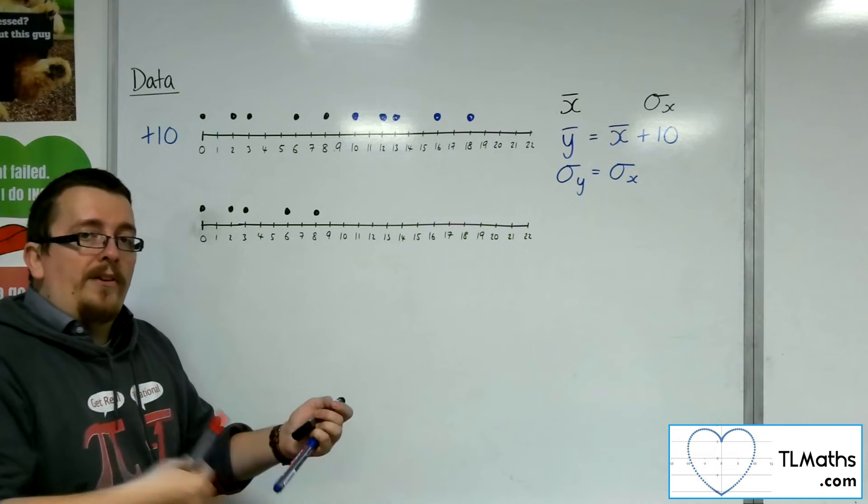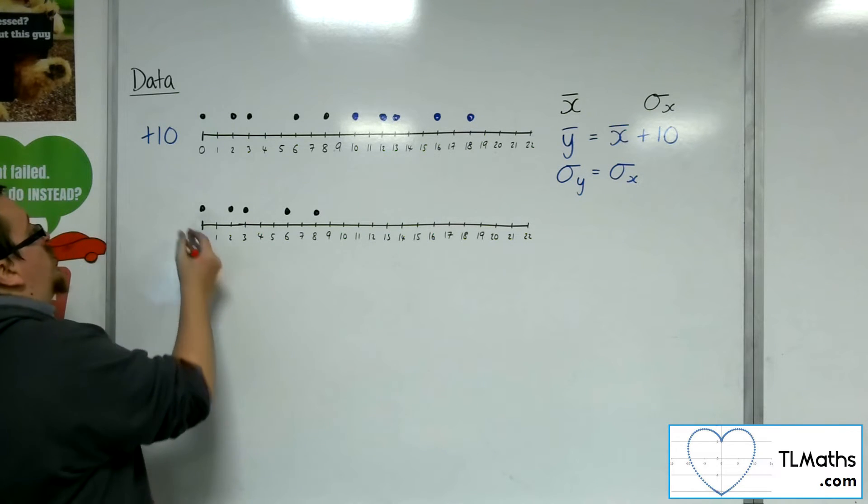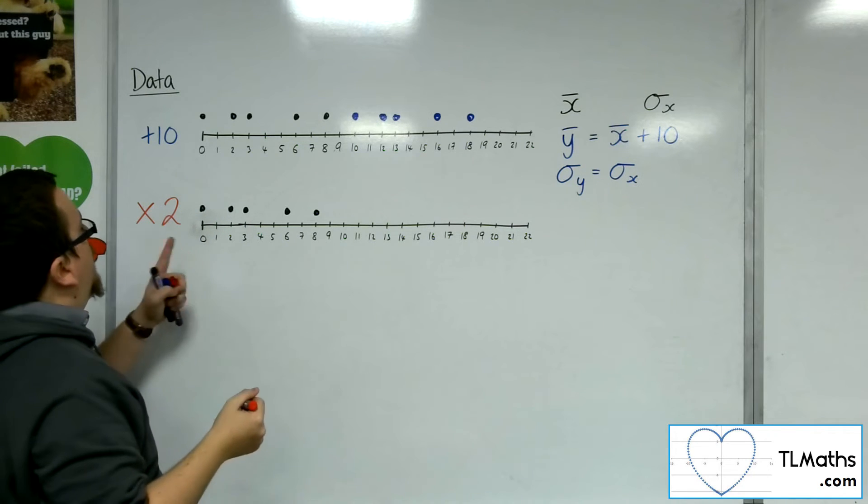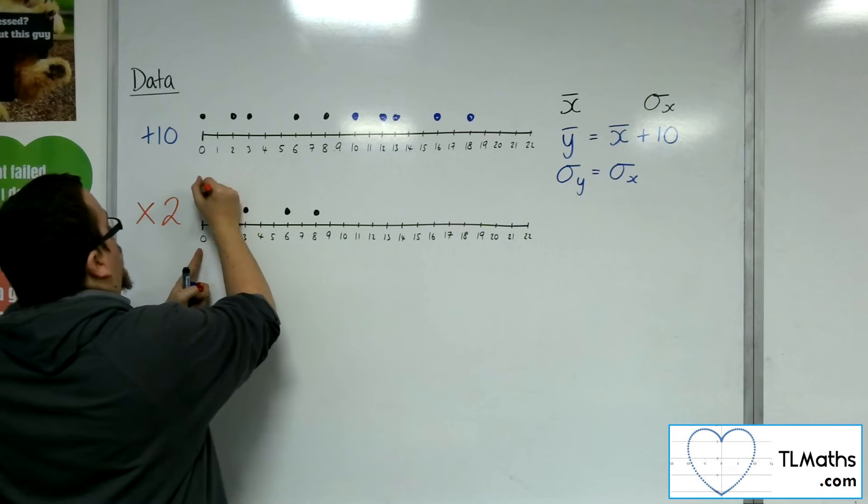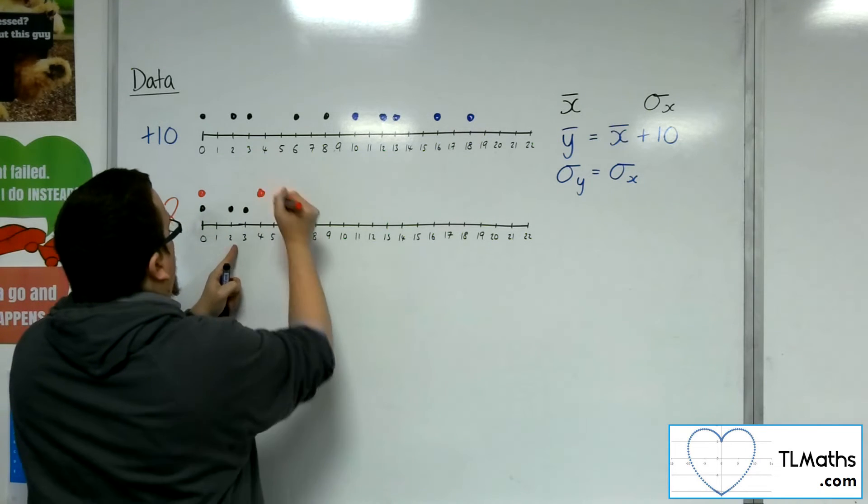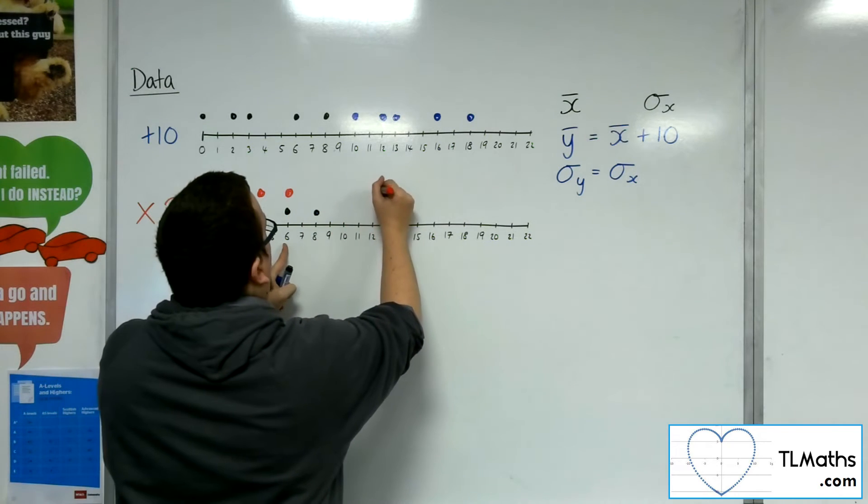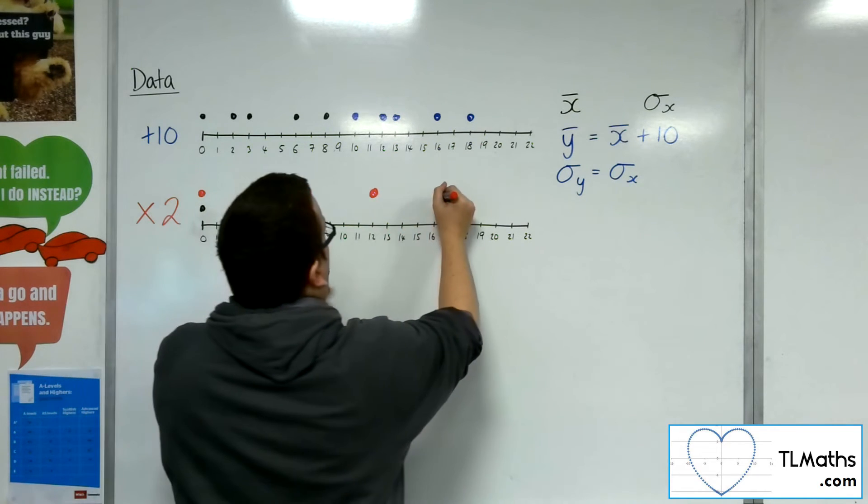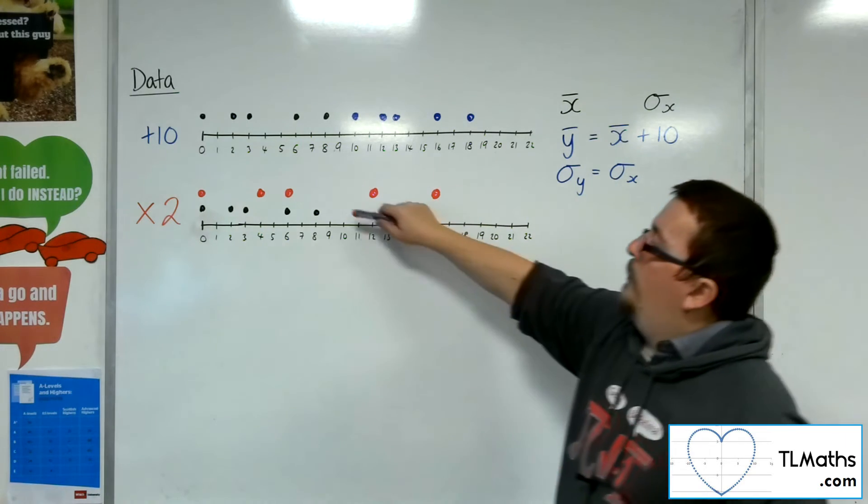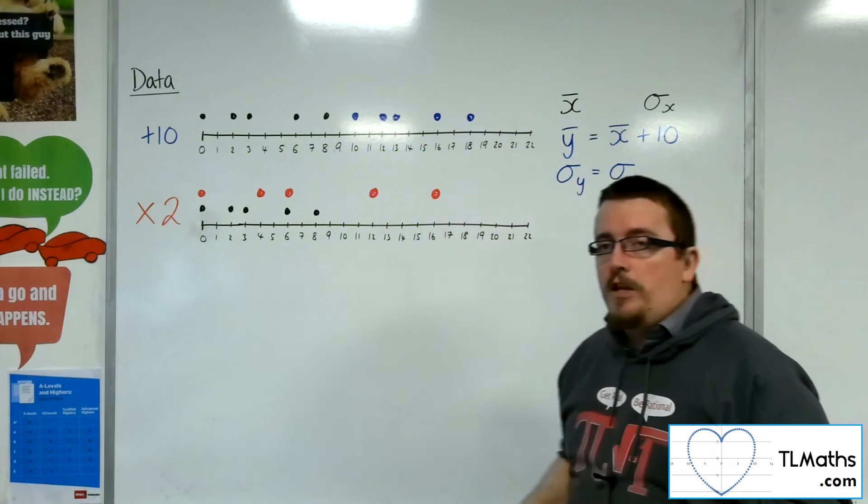In my second example, let's say I want to multiply all of these data points by 2. Now 0 multiplied by 2 will just stay where it is. 2 will go to 4, 3 will go to 6, 6 will go to 12, and 8 will go to 16. So the black ones here represent my old data set. The red ones are my new data set.